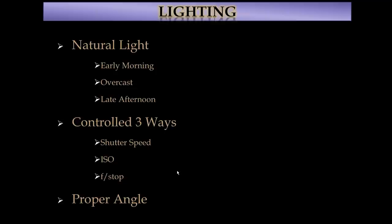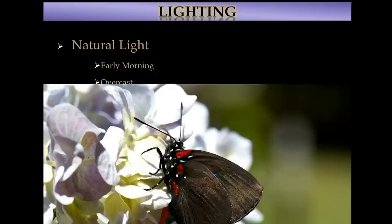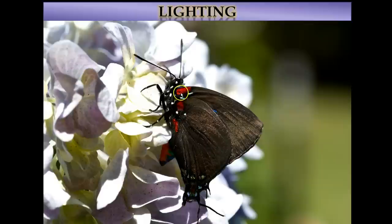Finally, the proper angle: if you see a subject, you can take virtually a limitless number of angles of that subject. Once you get your lighting underway, you've got to get it at the proper angle. Is the light kind of behind you, to the side, or in front of you? All of these affect the actual outcome of the image. Let's show an example — this is a beautiful butterfly on a beautiful flower, but I've taken a horrible image of it.